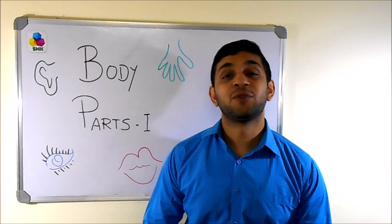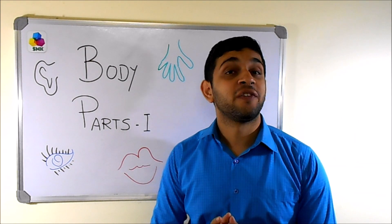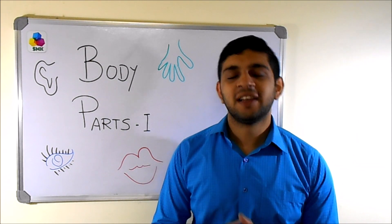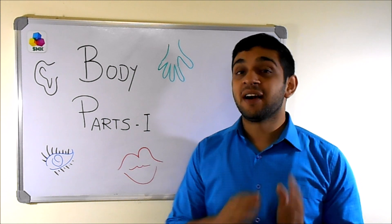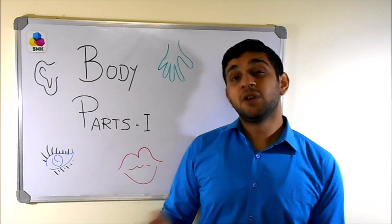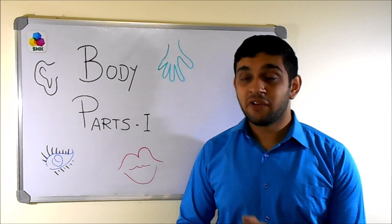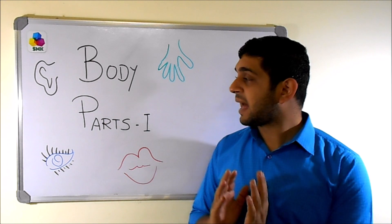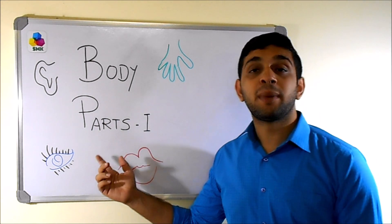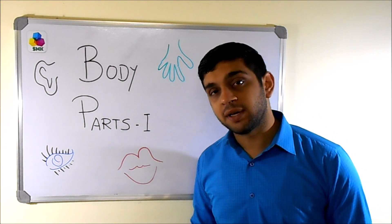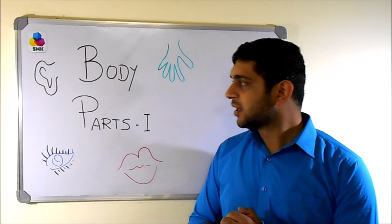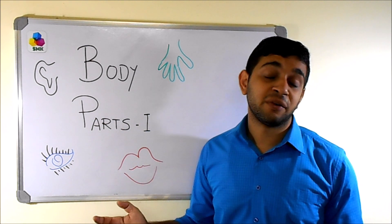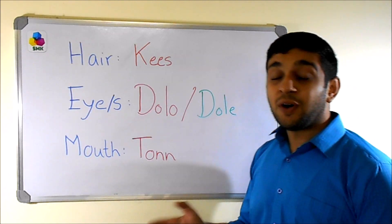Hi friends, welcome to another video of Learn Kokani with Saurab. We will be seeing a new series now — we will be learning a new set of words related to the parts of our body. As you can see, we have ear, eye, and some parts of our body here.